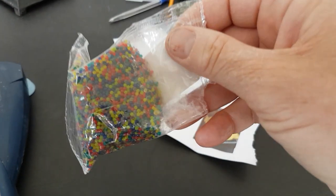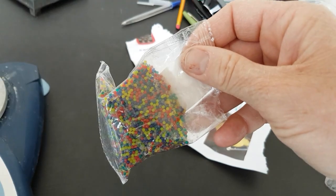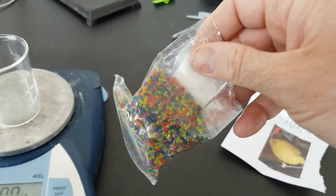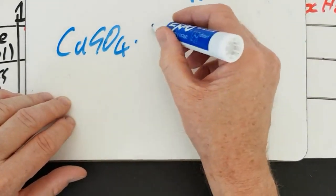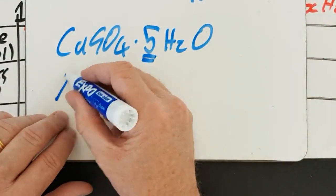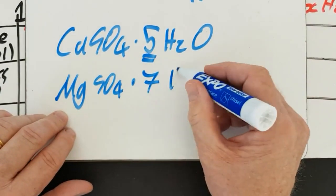I'm going to try to measure how many water molecules attach to each polyacrylate molecule in these water beads. For comparison, copper sulfate tends to be hydrated with five water molecules and magnesium sulfate with seven.